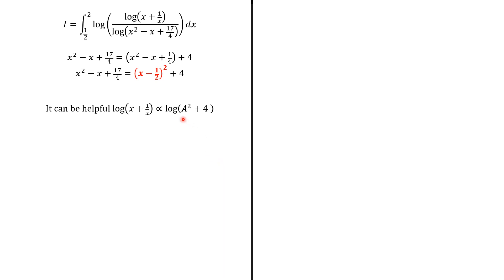Next, basically what we want to do is that we want log of x plus 1 over x to be of the form log of a square plus 4 up to a multiplicative constant. Because, looking at this expression, if a equals 2 times the sinh of a number t, a square plus 4 will be 4 times the cosh square of the same number t.